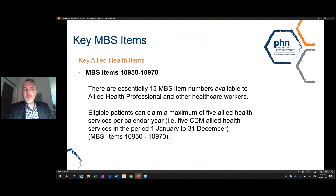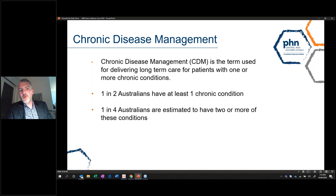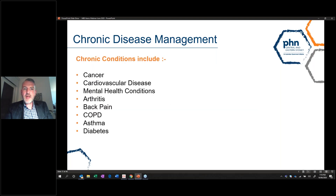Chronic disease management is a term used for delivering long-term care for patients with one or more chronic conditions. In Australia, one in two Australians has at least one chronic condition and one in four are estimated to have two or more. Chronic conditions include cancer, cardiovascular disease, mental health conditions, arthritis, back pain, COPD, asthma, and diabetes, among others.